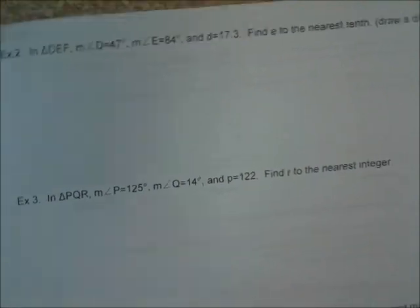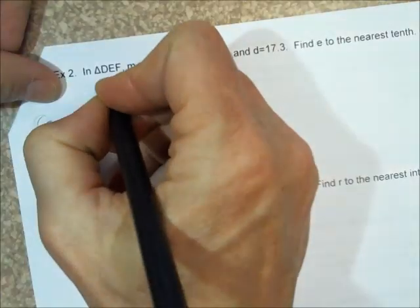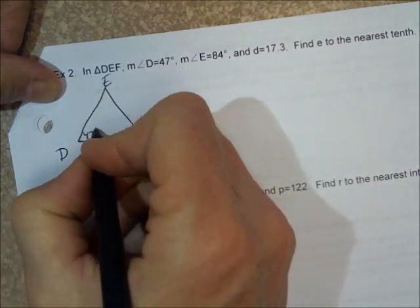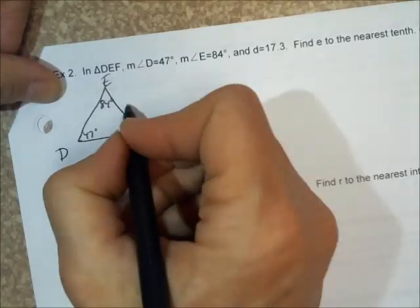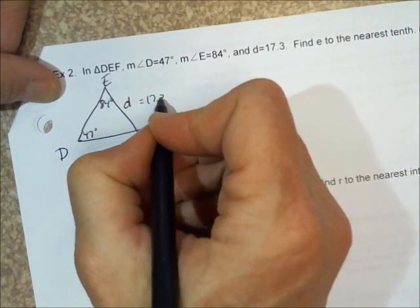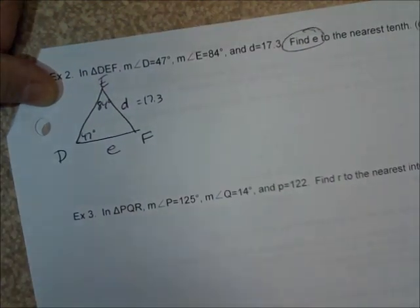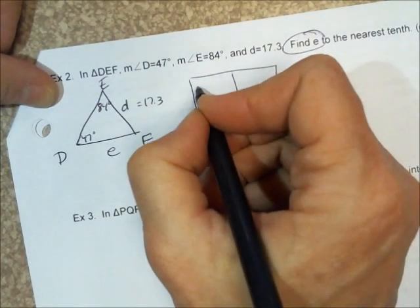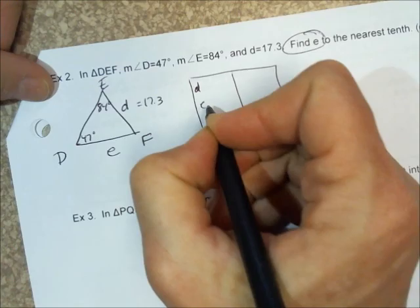In the next problem we have triangle DEF. Angle D is 47 degrees, angle E is 84 degrees, and little d — opposite big D — is 17.3. We want to find little e. Setting up our chart with the DEF information: capital D, capital E, capital F; little d, little e, little f.